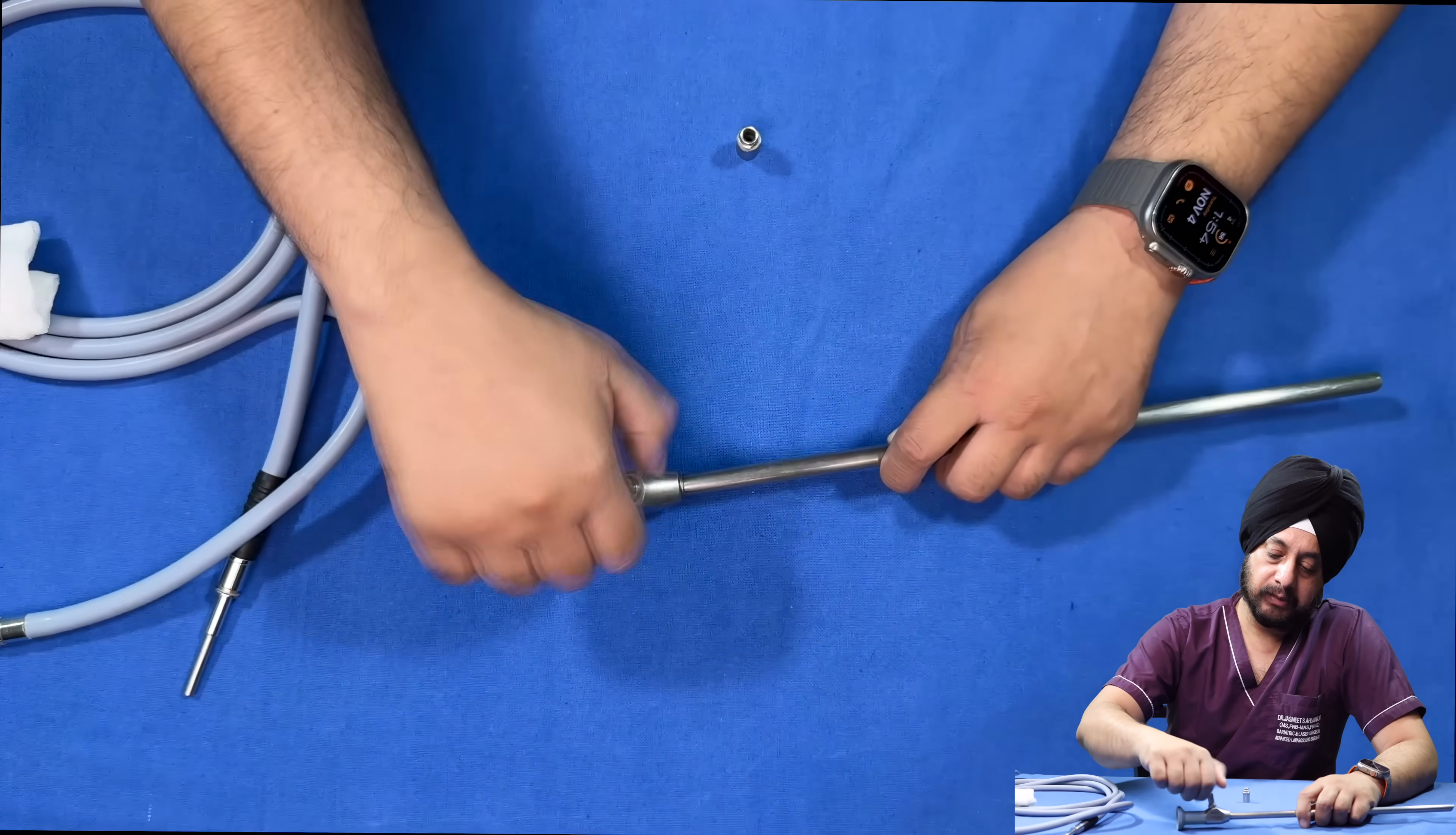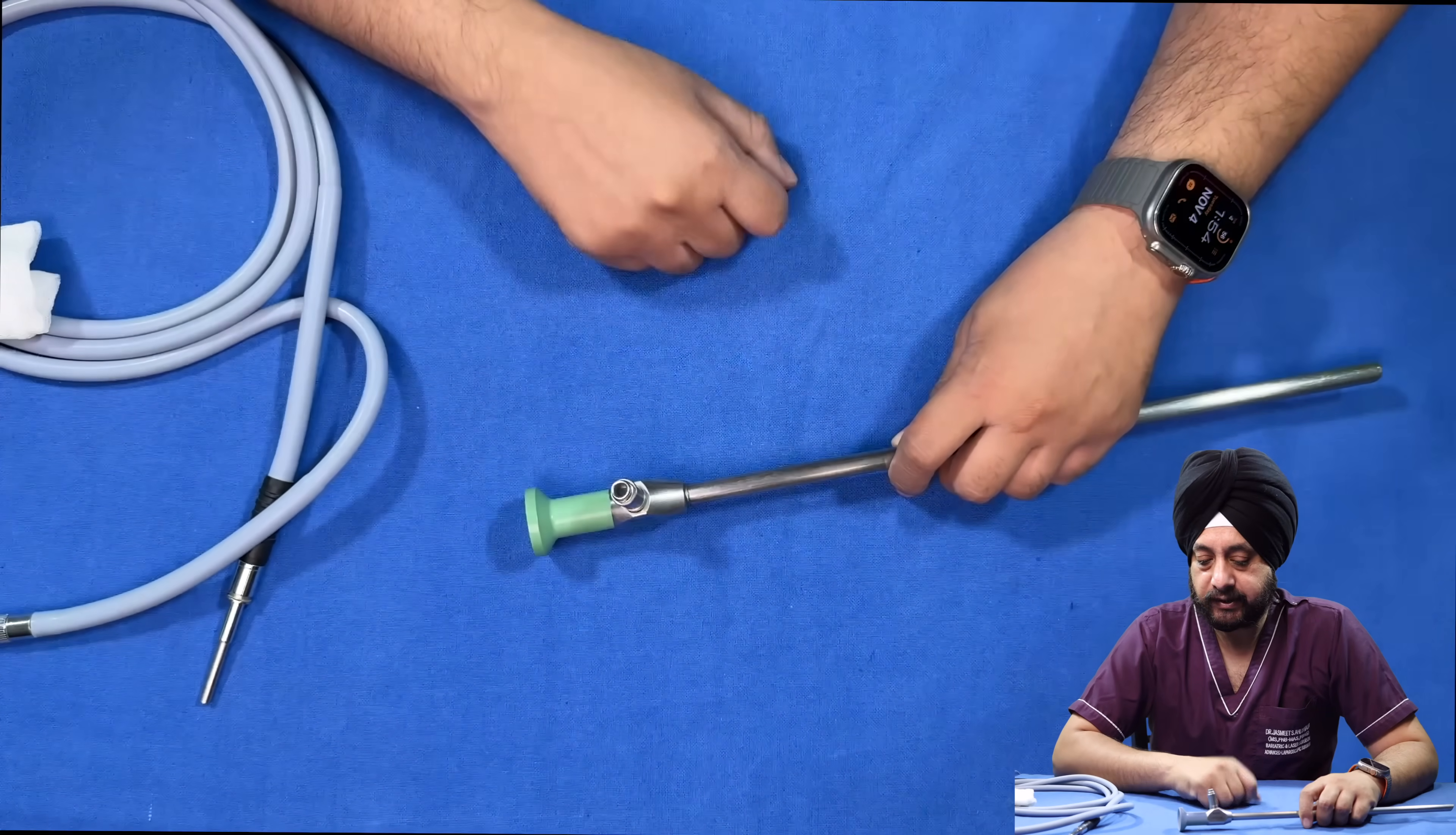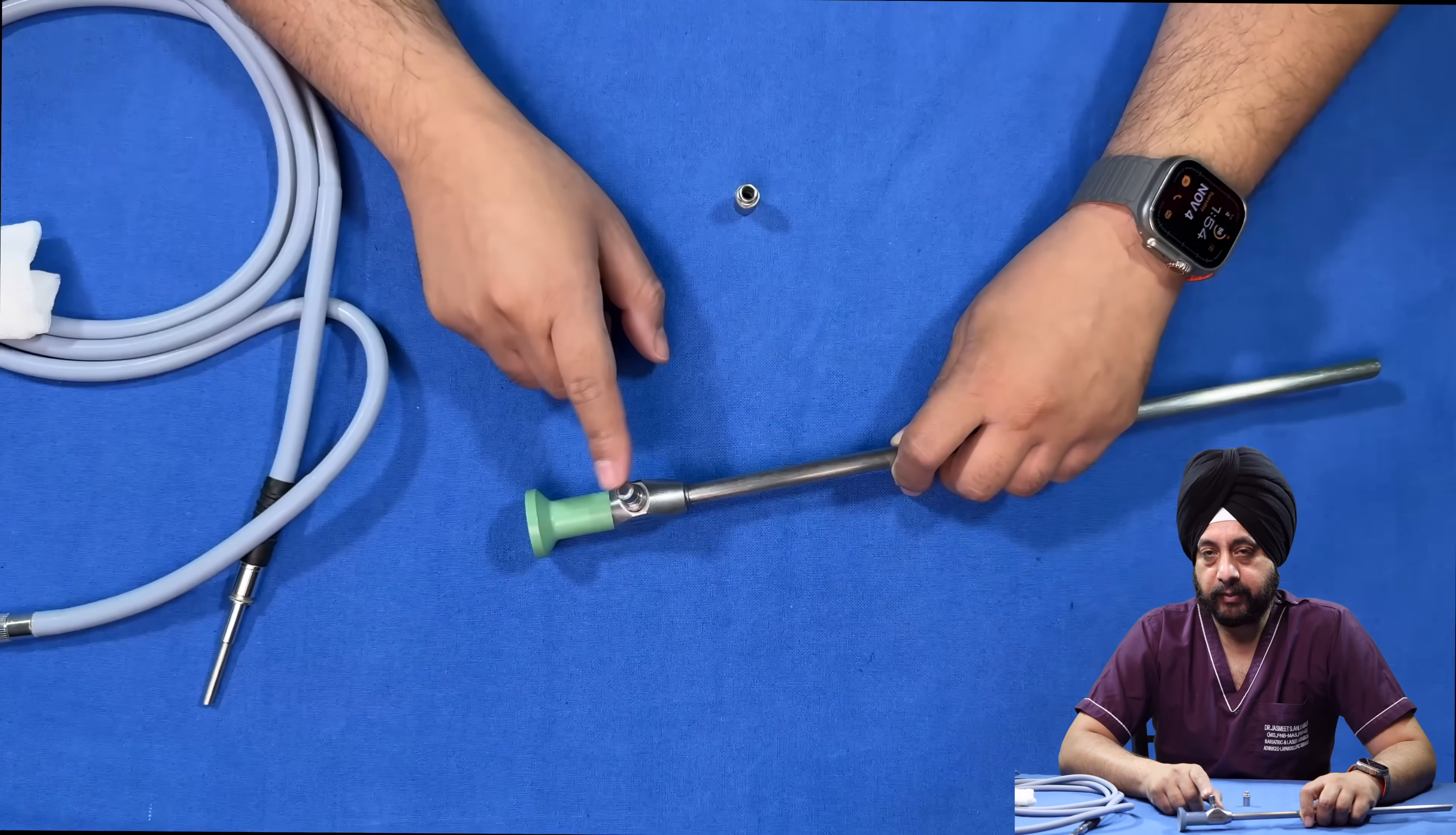The point to note is that the fiber optic end is quite deep. As you have more and more adapters over that, like the first one and the second one, it becomes almost impossible to clean the fiber optic end from outside. When cleaning the scope, make sure you remove the outer adapter, reach the end of the fiber optic, and clean it well with gauze.